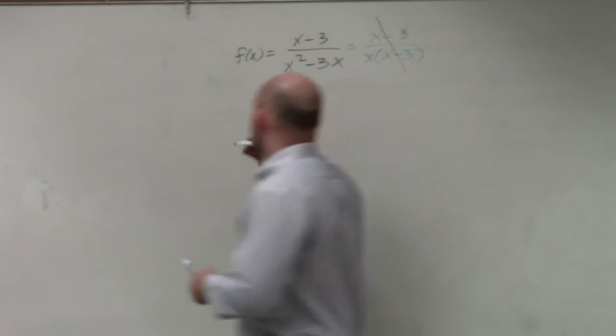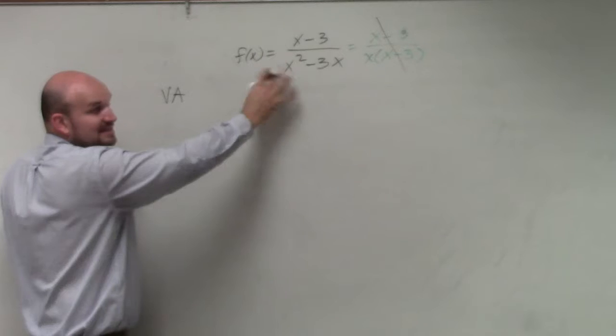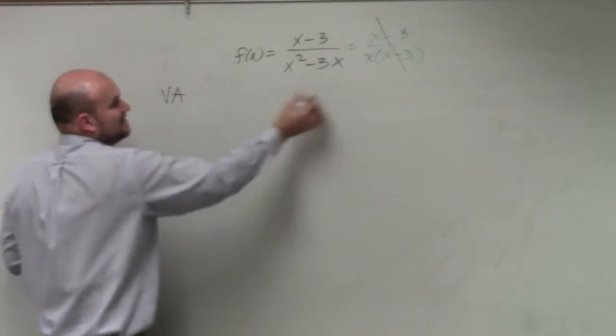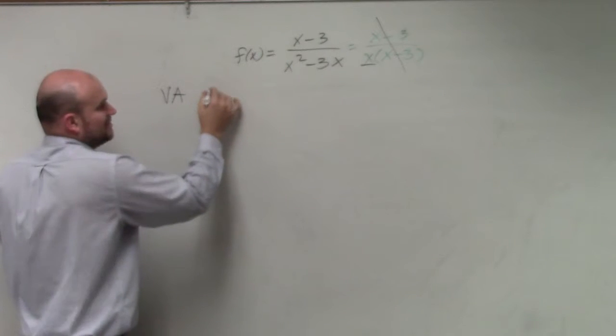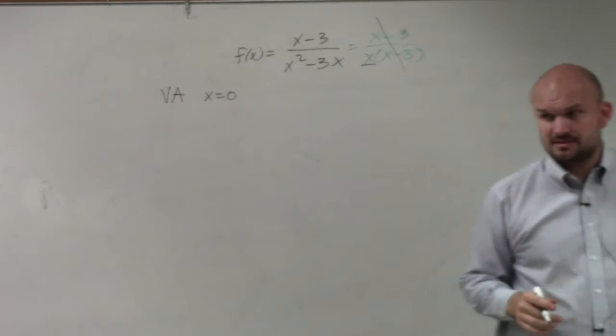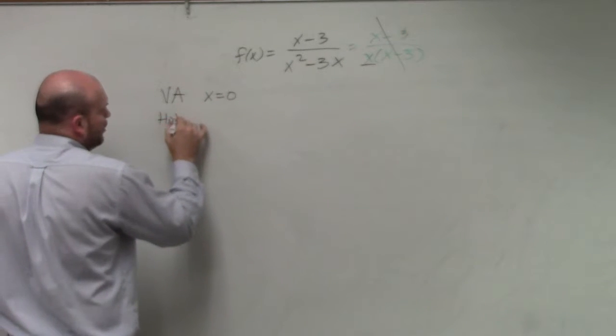A hole, right? So our vertical asymptote is now not going to be the denominator set equal to 0 because that's a hole. So we're just going to set this x equal to 0 because that's the only thing that's not a hole. Does that make sense?